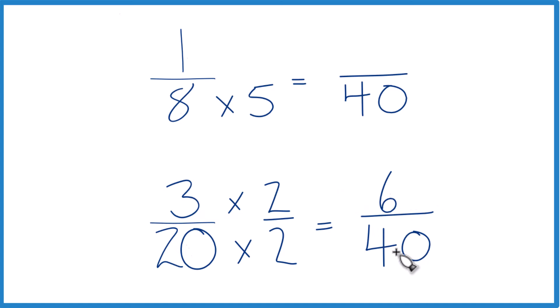6 fortieths, that's an equivalent fraction to 3 20ths, same value. Up here we'll multiply the numerator by 5. 1 times 5 is 5.